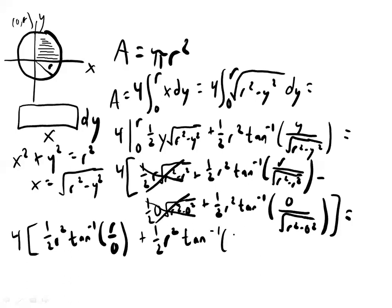Okay, so tan inverse means tangent of what? So tangent of what equals 0. The tangent of 0 equals 0. So this whole term goes away.